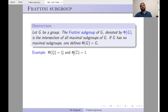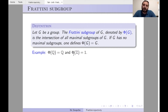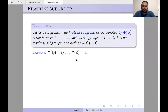On the other side, what is Φ(ℤ)? In ℤ, every subgroup of the form pℤ where p is prime is maximal. If you intersect all these subgroups, you get the trivial intersection. Therefore Φ(ℤ) = 1. In general, the Frattini subgroup is the set of non-generators, but I will not need that here.